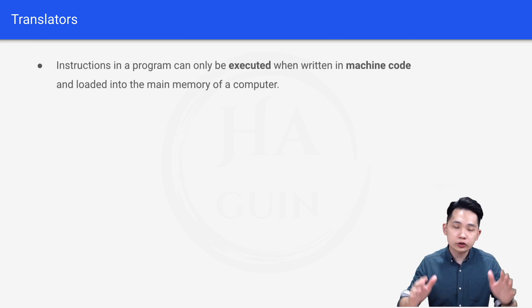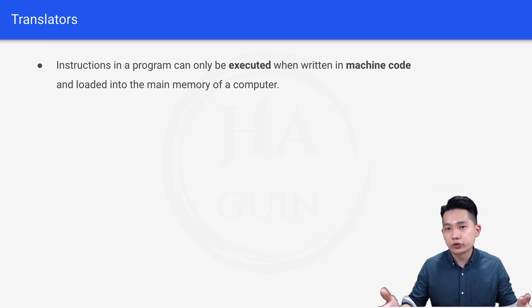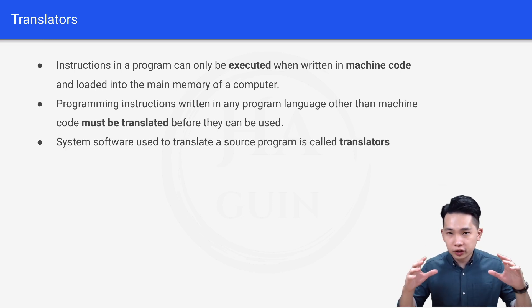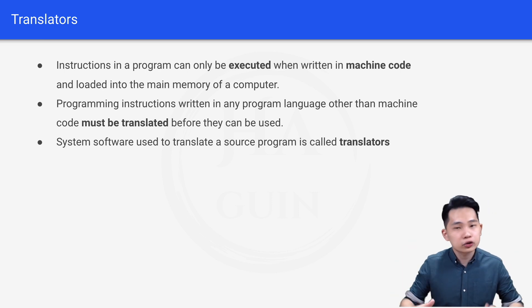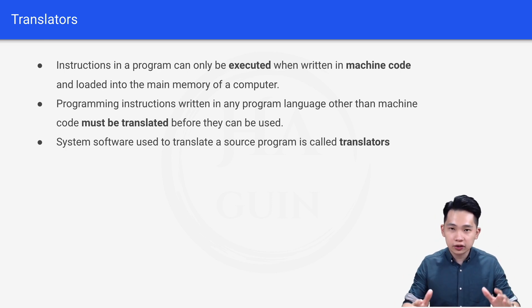First of all, let's look at translators. Instructions in a program can only be executed when written in machine code and loaded into the main memory of a computer. Programming instructions written in any language other than machine code must be translated before they can be used. Think of a translator just like a language translator — for example, translating French to English or Japanese to English. In computer science, you are translating assembly language or high level language into machine code so the computer can execute the instructions.